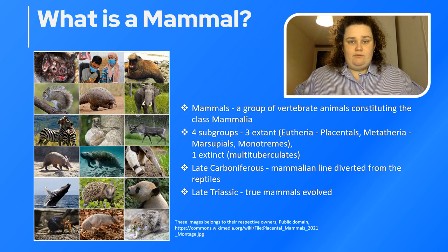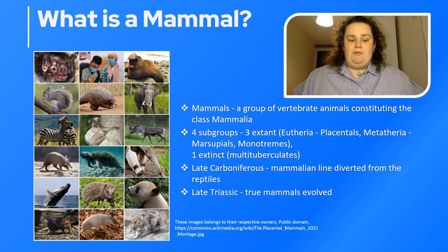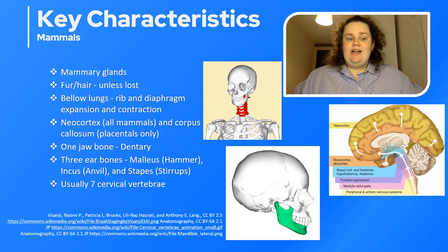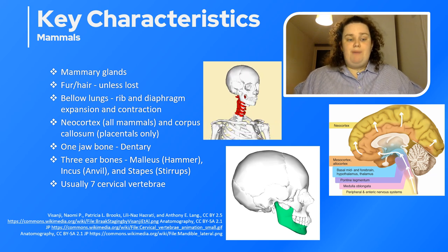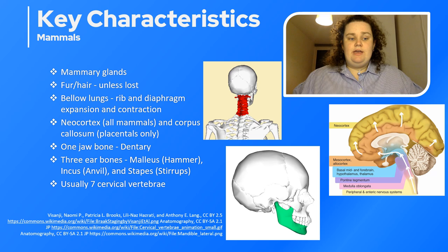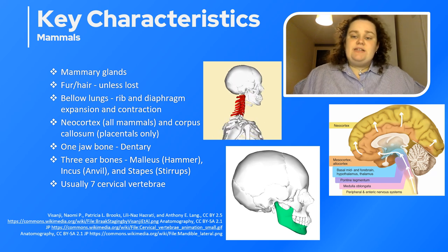The one extinct mammal family are the multi-tuberculates. Mammals started to evolve from the late Carboniferous where we see the mammalian line divert from the reptilian, and in the late Triassic true mammals evolved. The key characteristics of mammals include mammary glands, fur or being quite hairy unless this has been secondarily lost, bellow lungs — the type we humans have where the rib and diaphragm expand and contract with each breath — and a neocortex, which is part of the cerebral cortex where higher cognitive functioning is thought to have originated, present in all mammals.